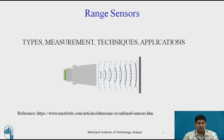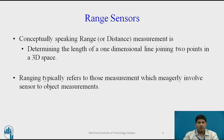For this particular session we'll just have an overview, take a look at some of the types and the measurement techniques involved, and we'll be covering applications a bit later — that is basically the scope of it. Now how can you actually define range? Conceptually speaking, range — or sometimes called distance — is determining the length of a one-dimensional line joining two points in a 3D space.